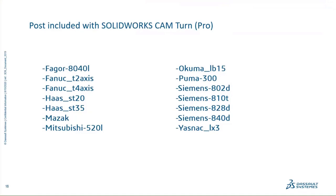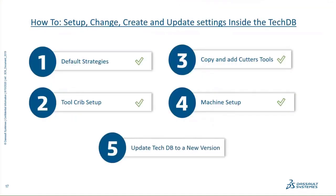So far we've talked about default strategies, tool crib setup, copy and add cutters, and machine setup. We've done a lot of the peripheral stuff to kind of get you started — it'll get you going so you can get your machine set up and ready to go. The last area is updating the Tech DB to a new version.